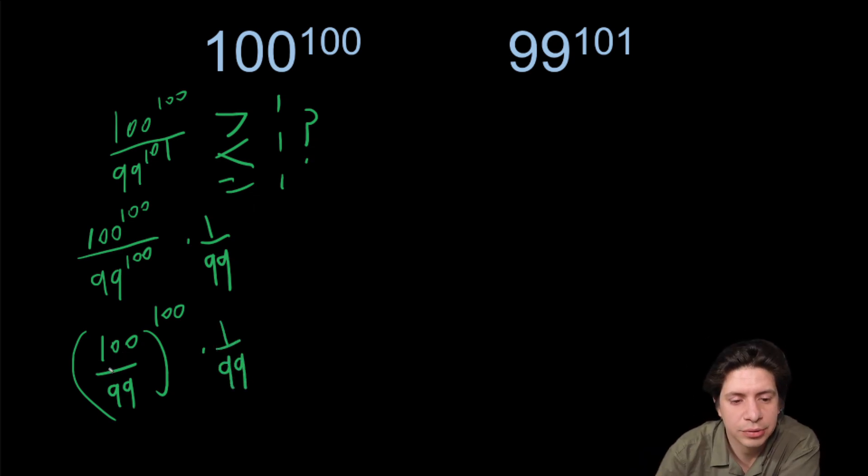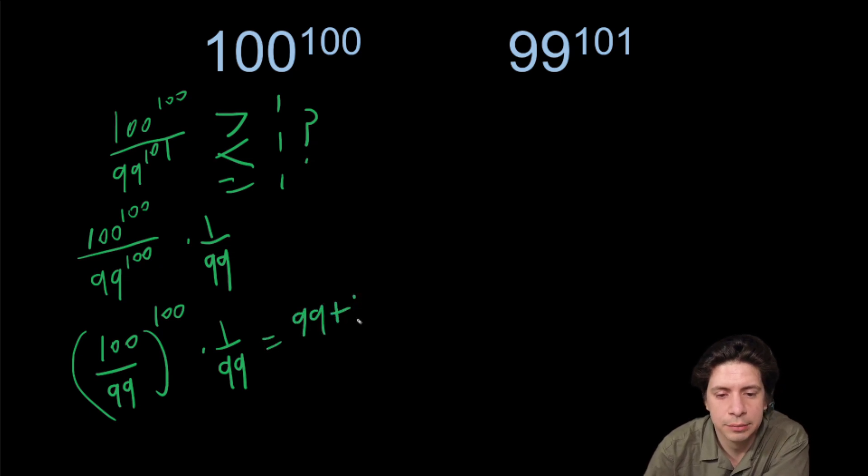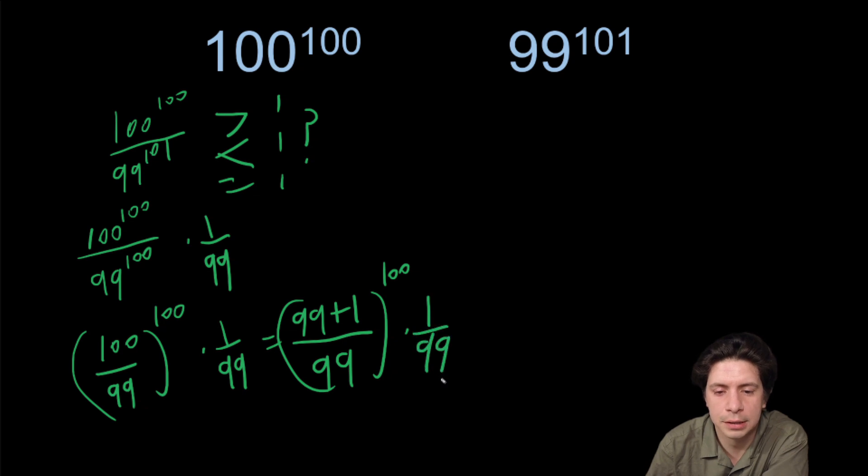Now 100 is really 99 plus one. So we can write that as 99 plus one all over 99 to the 100 times one over 99.